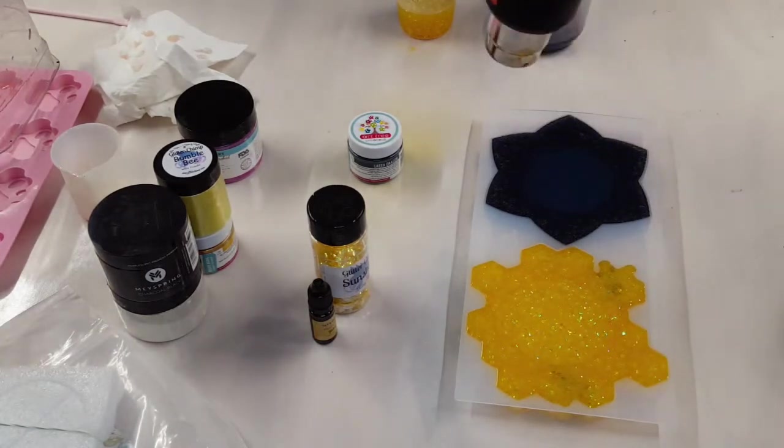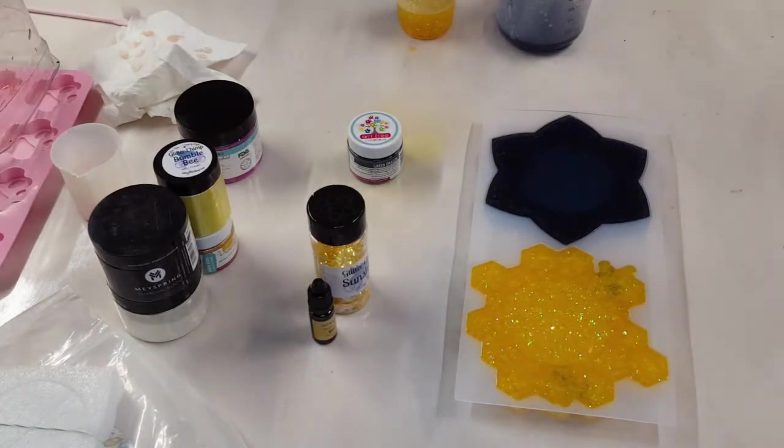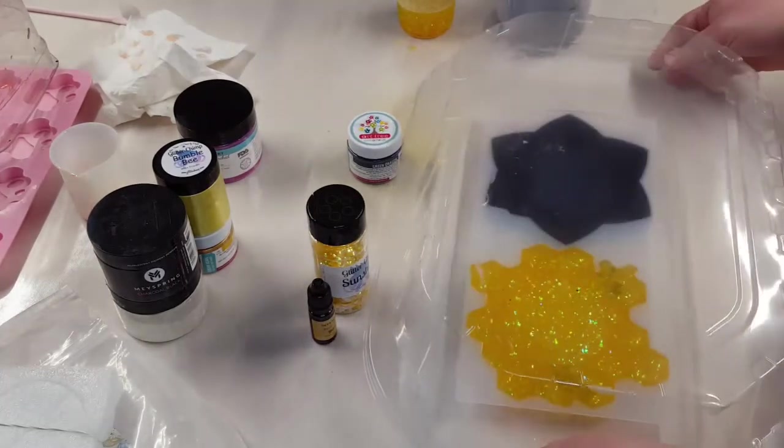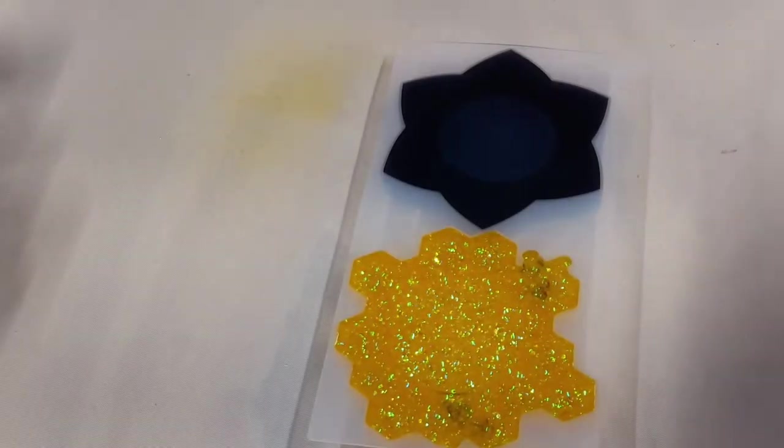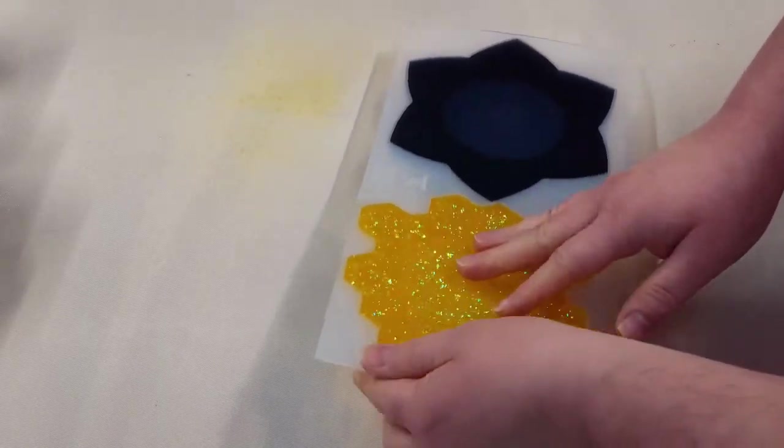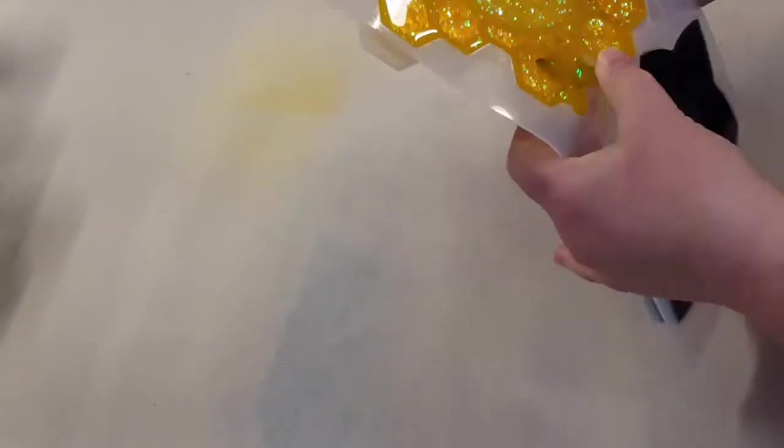So once my molds are filled up I'll hit it with my heat gun to get any bubbles. You don't want to use your torch on silicone molds. You run the risk of not only damaging the mold but your piece too. Cover it, let it set for 24 hours before demolding.